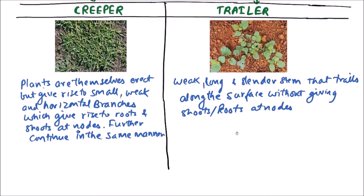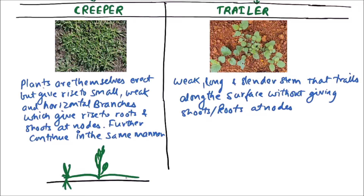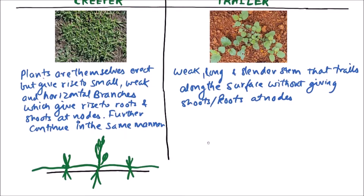So if we see how the creepers move or grow, then if this is a surface, creepers are themselves growing as erect branches or erect stem or plant, then the horizontal branches are given and at the nodes rooting and shooting will occur and that will continue further. So this is the mechanism of growth in creeper.